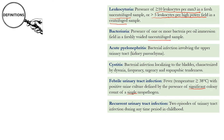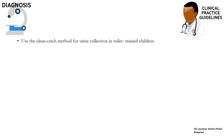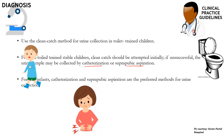To diagnose UTI, the clean catch method is used for toilet trained children. For non-toilet trained but stable children, clean catch should be attempted initially, but if unsuccessful, the urine sample may be collected by catheterization or suprapubic aspiration. In infants, catheterization and suprapubic aspiration are the preferred methods for collection of urine.